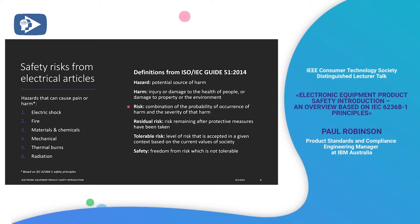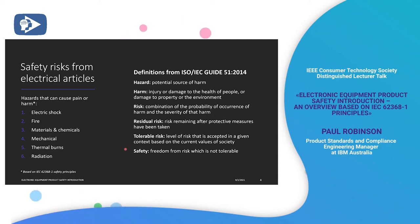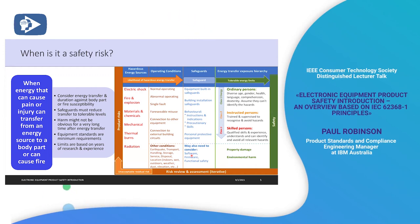Risk is how likely it is that harm will occur and how severe that harm is. You can't make anything perfectly safe — there's always going to be some residual risk. Residual risk is the risk remaining after protective measures have been taken, but we've got to reduce it down to tolerable levels accepted by society, regulators, consumers, and people using the equipment. Safety is freedom from risk which is not tolerable.